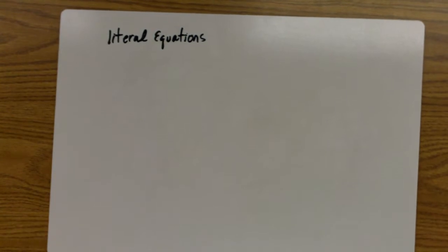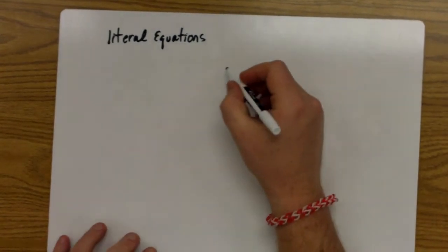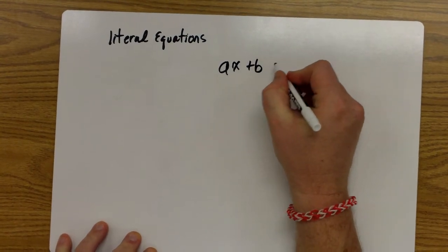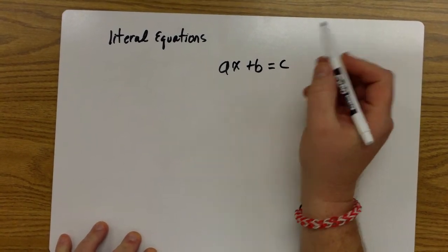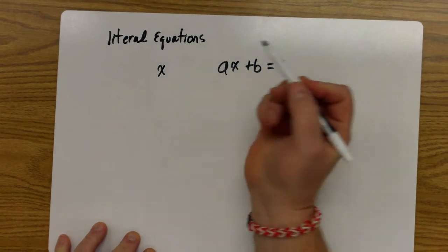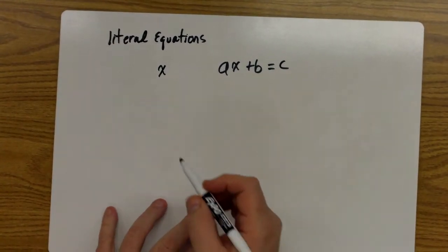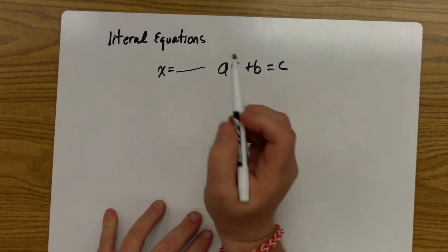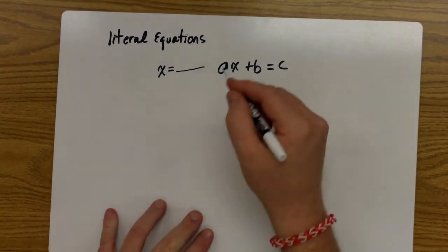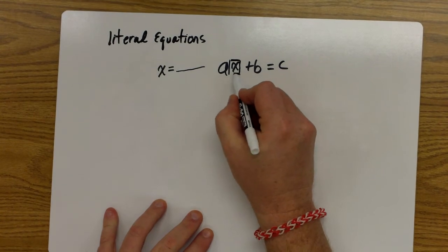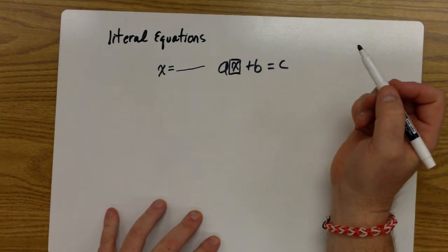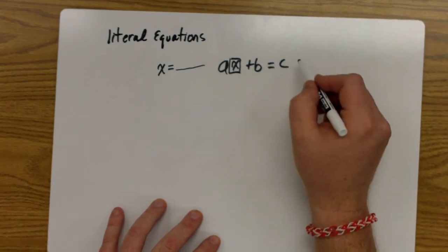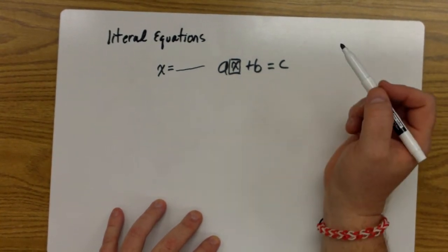Let's start with something simple like, let's say, AX plus B equals C, and we want to solve for X. When we say solve for X, we want to have X equals by itself and everything else on the opposite side. So we're going to go ahead and put a box around the X, and then we're going to look on both sides of the equation and find out if there's any other terms that have an X in them.